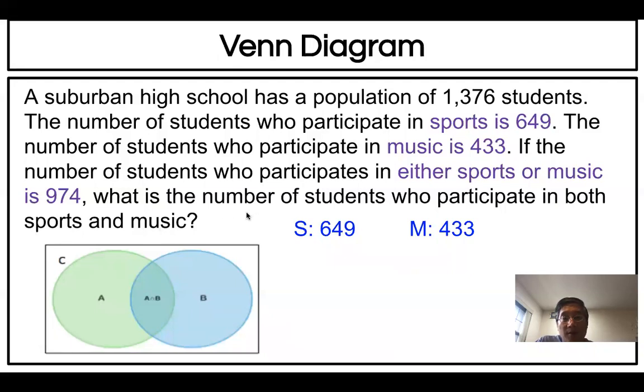Students who like sports: 649, and music: 433. For all together we have 1,376. But there's another number. Let's focus on either 974. What is 974? It's the union, right? So how do you find out intersection? That's the question. Write down all the information here. It'll be much easier. Sports 649, music 433, S union M is 974.